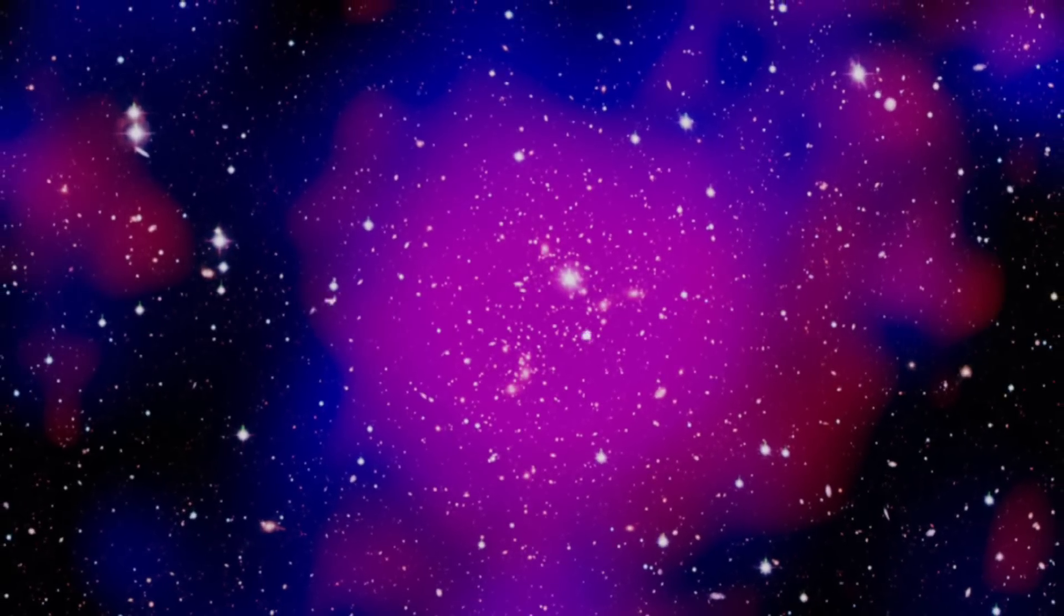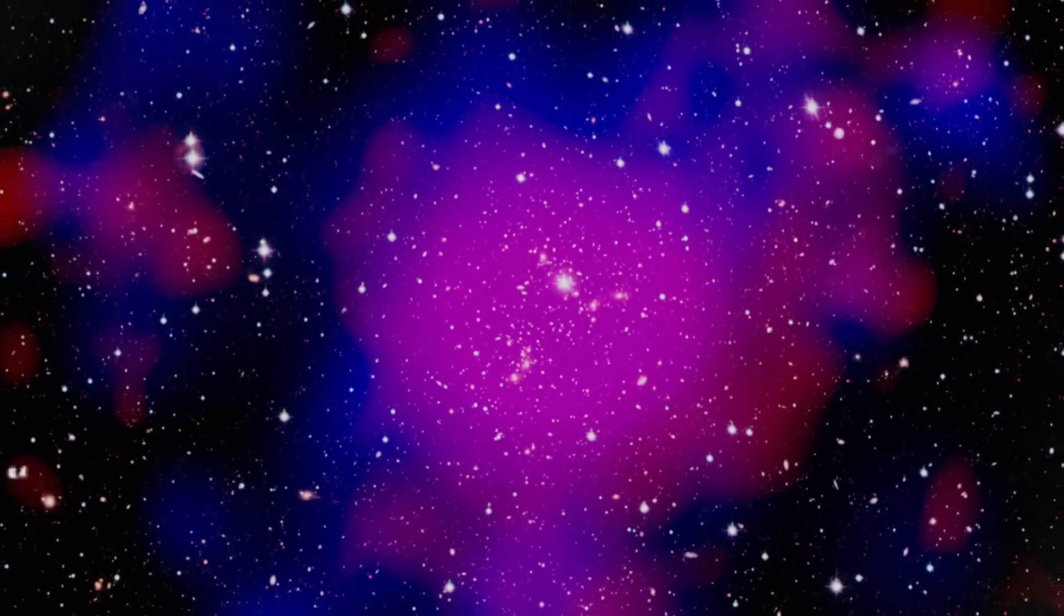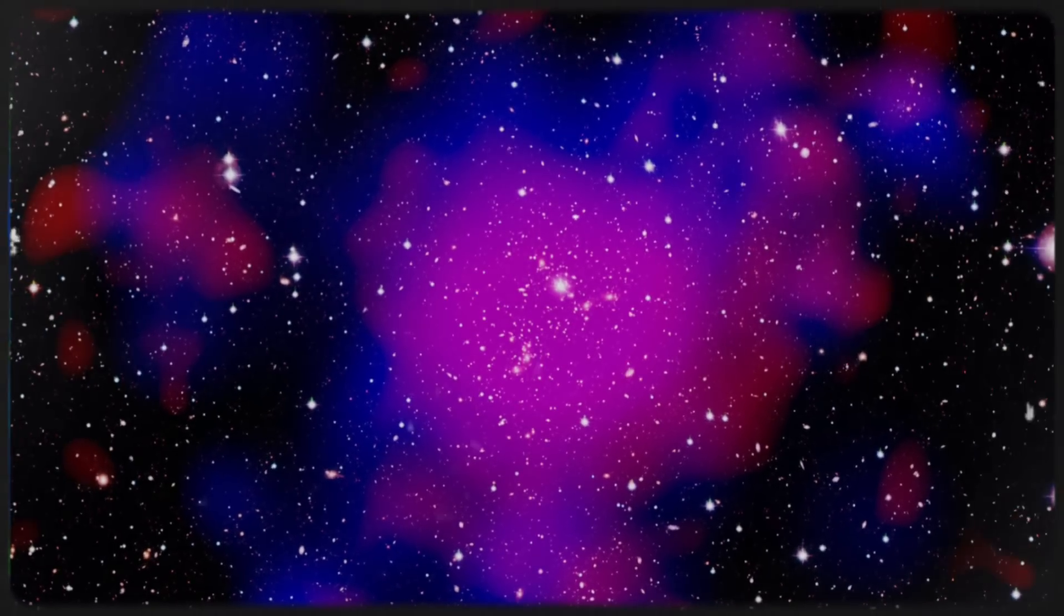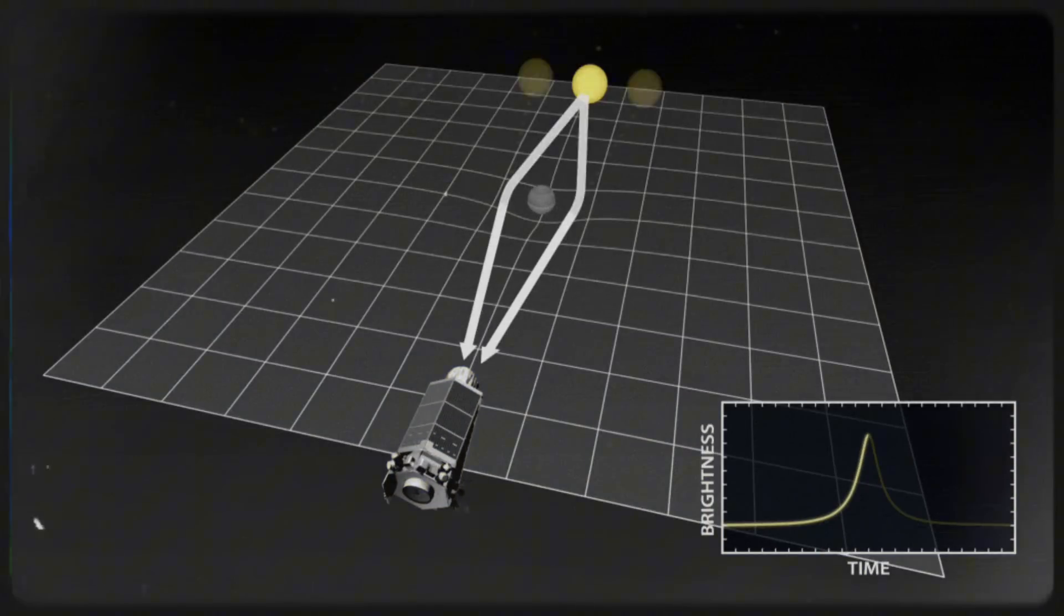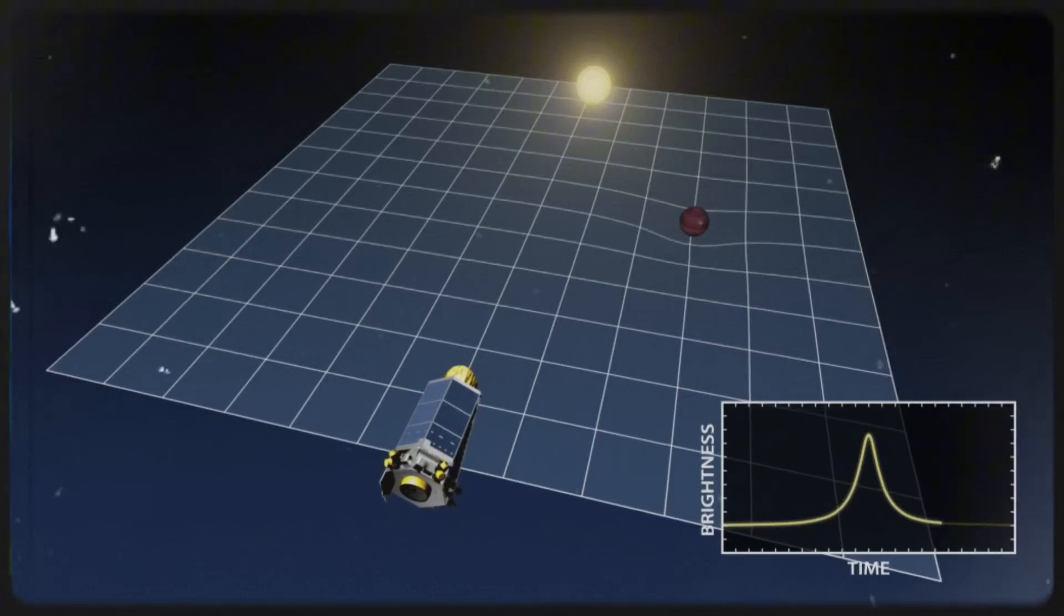A deep-field image of Pandora's cluster revealed three merging galaxy clusters coming together to form a massive supercluster. The gravitational lensing effect from this merger amplified the light from even more distant galaxies, offering an unprecedented look at the early universe.